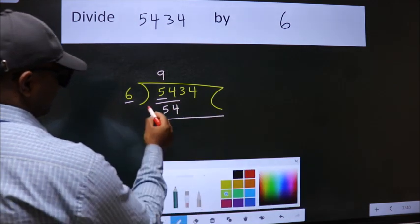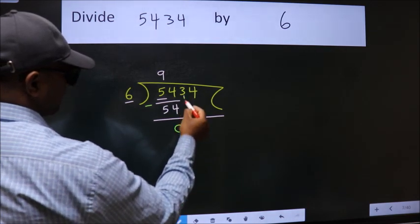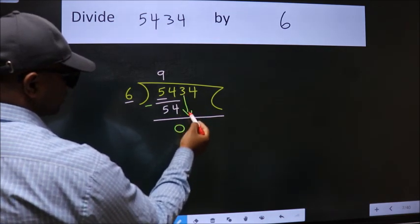Now we should subtract. We get 0. After this, bring down the beside number, so 3 down.